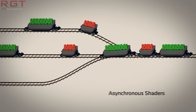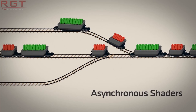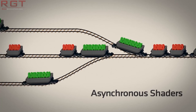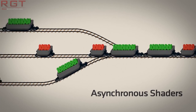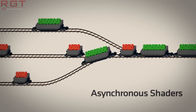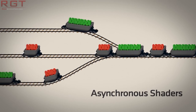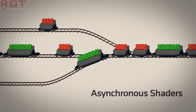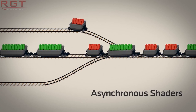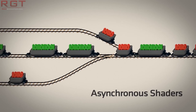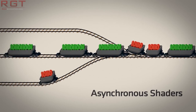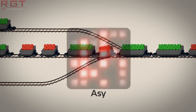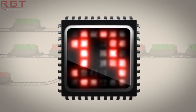Occasionally, there are bubbles in the graphics pipeline, which is basically the GPU sitting idle, or parts of the GPU sitting idle. Asynchronous compute allows the graphics pipeline to be much better utilised by simply inter-splicing compute work into those idle gaps.